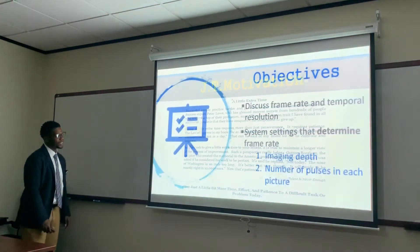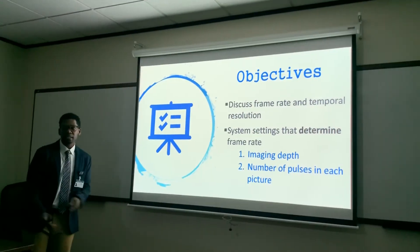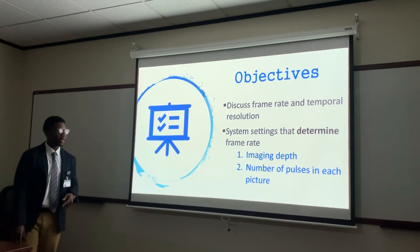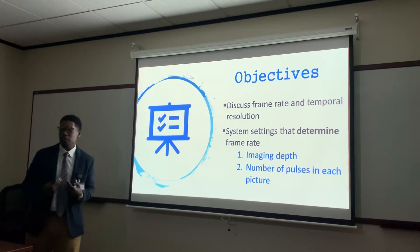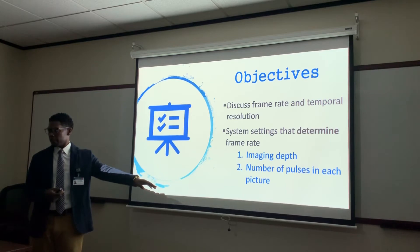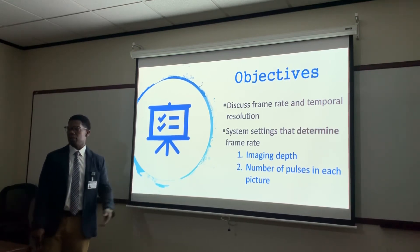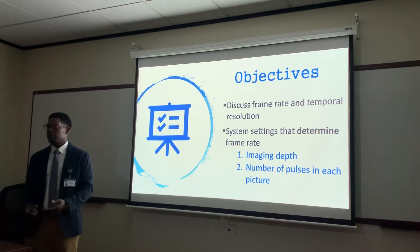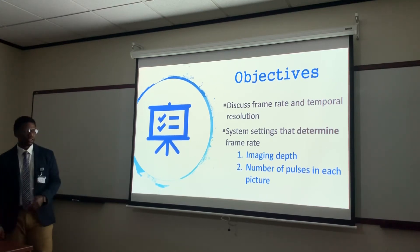Objectives of real-time imaging: temporal resolution — we're going to discuss frame rate and temporal resolution, and the system settings that determine frame rate. Those system settings include imaging depth and the number of pulses in each picture. Those are sonographer-controlled settings. As technologists, we can actually control the imaging depth — when we turn the depth button, we're changing the imaging depth, and we're also changing the pulse-repetition frequency.